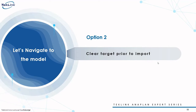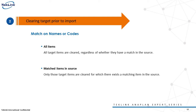Now let's demonstrate option two: clearing the target prior to import. Within this option there are really two sub-options, assuming we're matching based on names and codes. The first is all items, where everything in the target module is cleared regardless of matching. The second option is when only matched items are cleared — items that have an entry in both source and target data and are linked within our matching process.